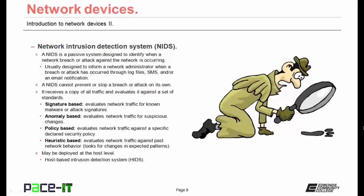That standard may be signature based, meaning it evaluates network traffic for known malware or attack signatures. That standard may be anomaly based, meaning it evaluates network traffic for suspicious changes. It could be policy based, meaning it evaluates network traffic against a specific declared security policy. Finally, it may be heuristic based, meaning it evaluates network traffic against past network behavior, looking for changes in expected patterns. The intrusion detection system may also be deployed at the host level — when placed on a host, instead of being called a NIDS, it's called a HIDS.